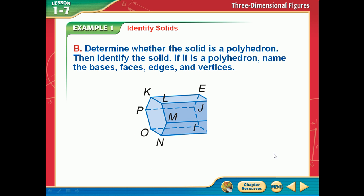What about that one? Count the sides of the base: one, two, three, four, five, six — hexagonal. It's not a cylinder because we use cylinder only for rounded, circular bases. This has straight edges and a hexagon base, so we call this a hexagonal prism.